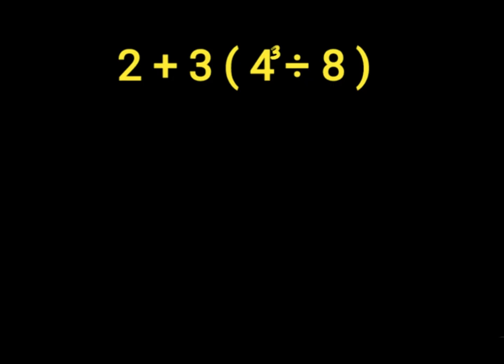We have the first of our parenthesis, which is 4 to the power of 3, divided by 8. 4 to the power of 3 is equal to 4 times 4 into 3 places, which is 64. Then we have 64 divided by 8.